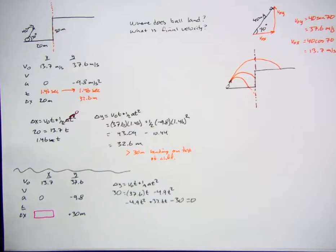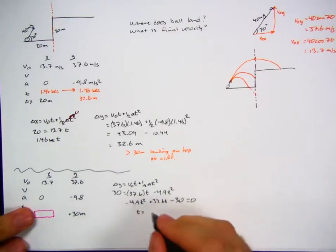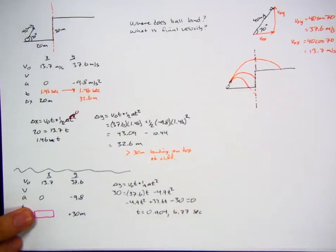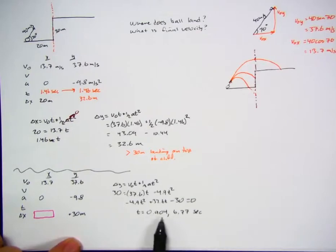My beloved quadratic equation: minus 4.9 t squared plus 37.6 t minus 30 equals zero. We can go over here to the fancy dancy quadratic equation, and I end up with two values. Time is equal to 0.904 and 6.77 seconds. Uh-oh, here's the problem. In the past we've always had a negative number and a positive number for time, and we've always said oh let's just choose the positive one. I get two positive numbers for time. Which one do I choose?